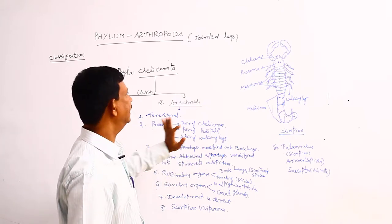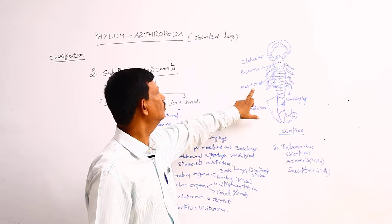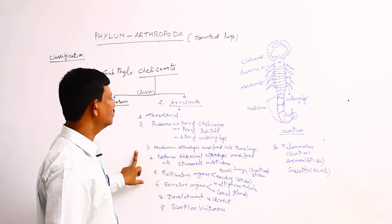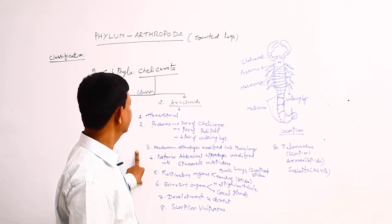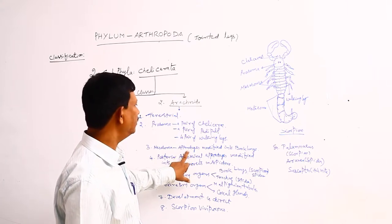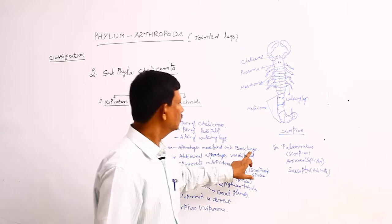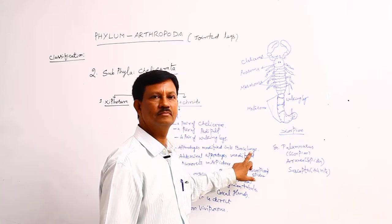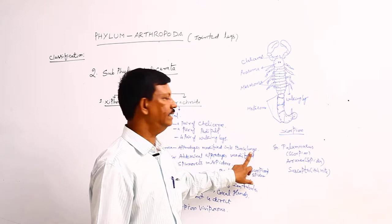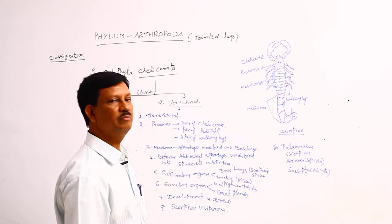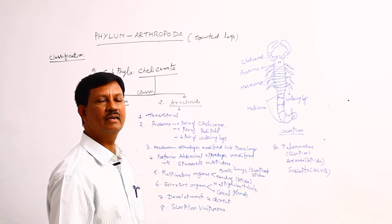The second part is known as the mesosoma. In mesosoma also, there are a large number of appendages present. And here, almost all appendages are modified into book lungs. They resemble lung and book, hence they are known as the book lungs. They are mainly useful for respiration.